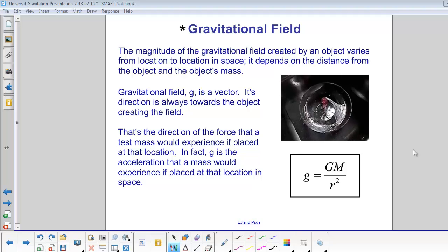The magnitude of the gravitational field created by an object varies from location to location in space. It depends on the distance from the object and the object's mass. The object's mass is capital M, and the distance to the object's center is R.